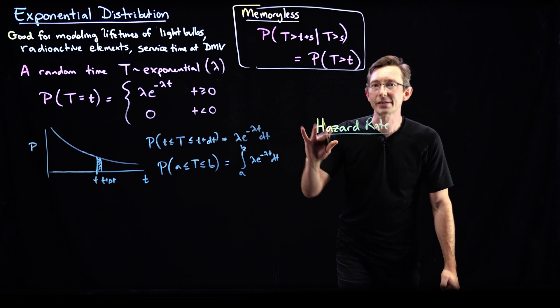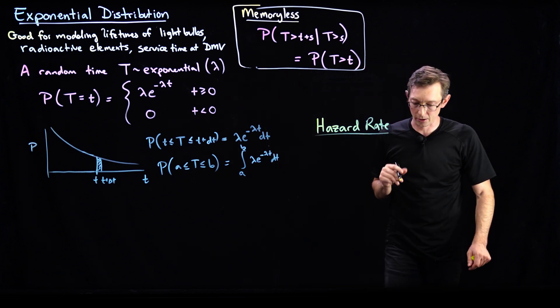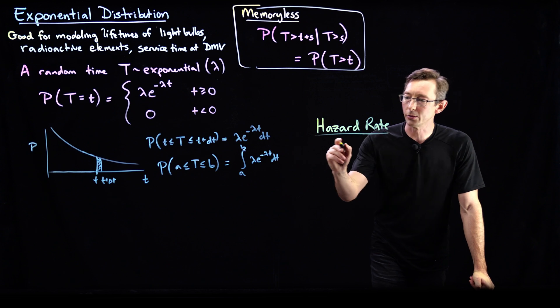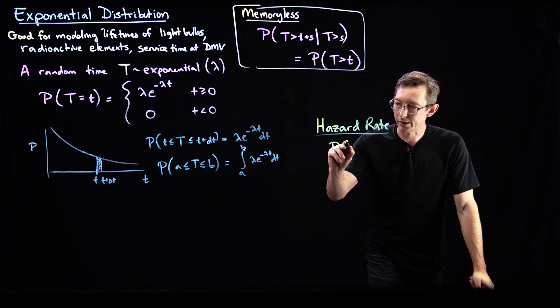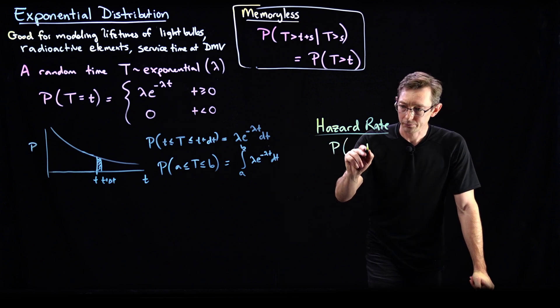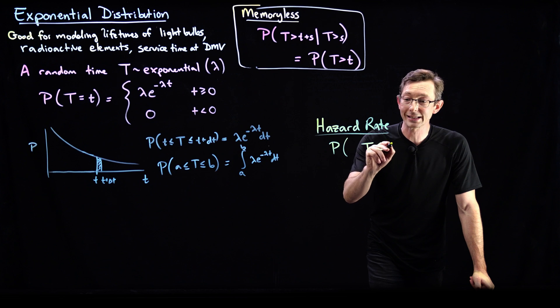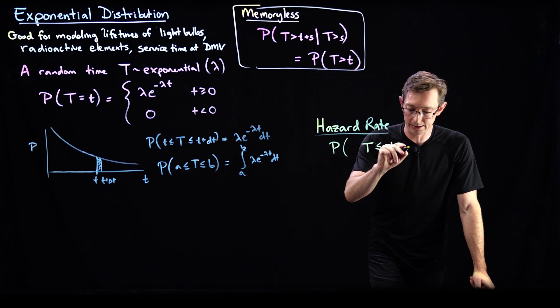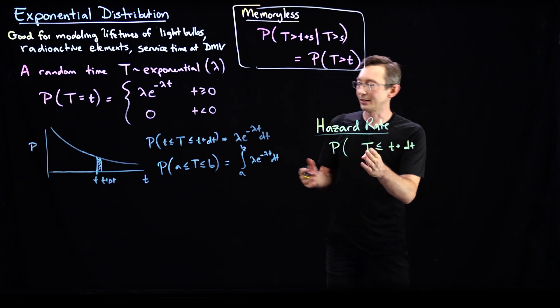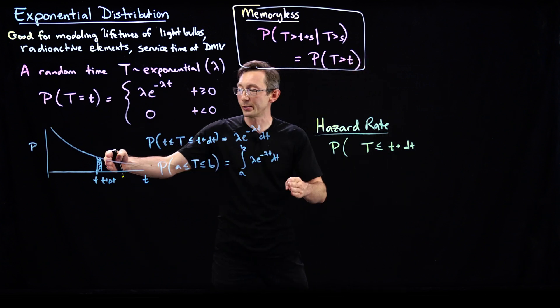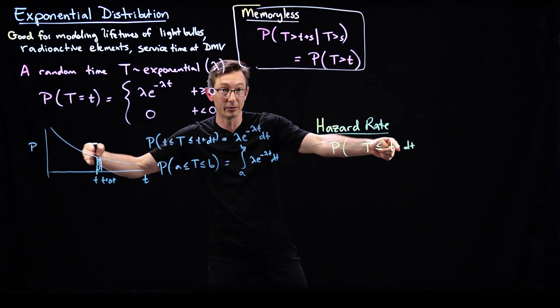Okay, so the hazard rate for an exponential distribution is the following. We're going to compute the probability that we will fail in less than little t plus dt. And I can basically just compute that it's the cumulative distribution function to the left of little t plus dt.